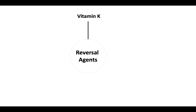Let's discuss the available reversal agents. The first is vitamin K. Vitamin K reverses the vitamin K antagonists. Oral vitamin K has an onset of action of 6–10 hours and peaks in 24–48 hours. The intravenous route has an onset of 1–2 hours and peaks in 12–14 hours.